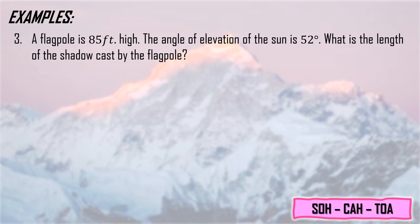Third example: A flagpole is 85 feet high. The angle of elevation of the sun is 52 degrees. What is the length of the shadow cast by the flagpole? We place the flagpole here, and the shadow represented by H is here. The sun is at the top. The flagpole has a height of 85 feet. The angle of elevation of the sun, meaning it's up here since it's angle of elevation, is 52 degrees pointing upward to the sun. The question is what is the length of the shadow cast by the flagpole? This is the value we're looking for.